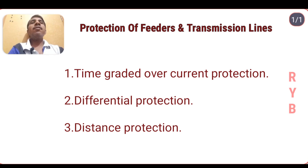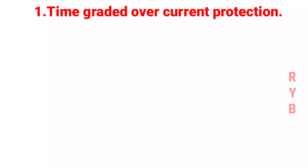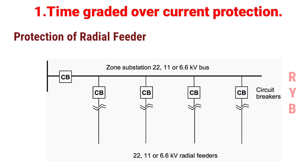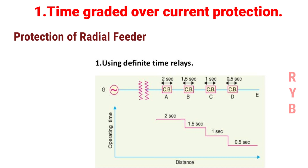Let us go for time graded over-current protection, starting with protection of radial feeders. A radial feeder radiates from the substation in one direction only — power can flow in one direction only, from source to load. There are three types of feeders: radial, loop, and ring main. A radial feeder can be easily protected by using either definite time relays or inverse time relays.